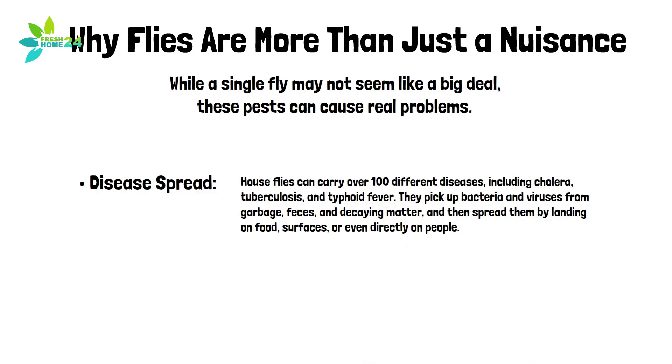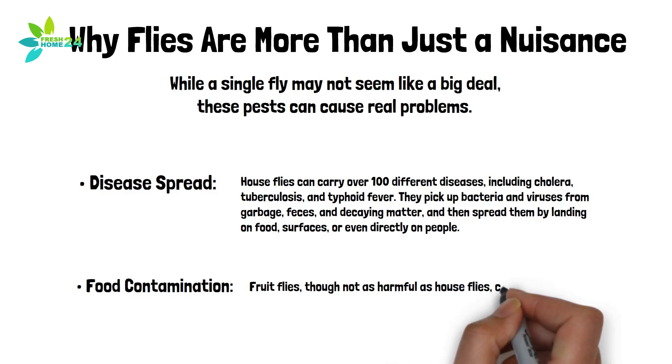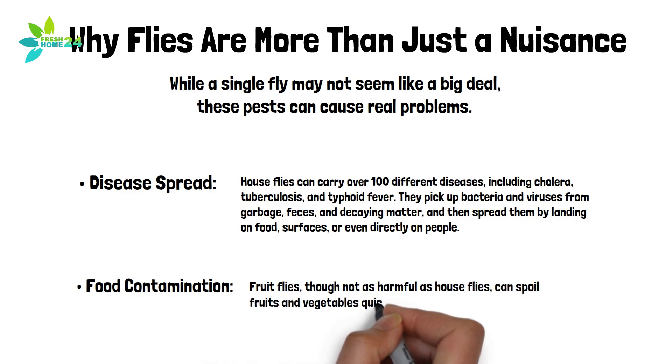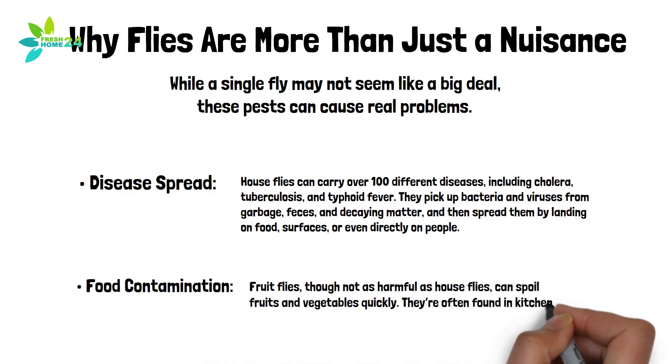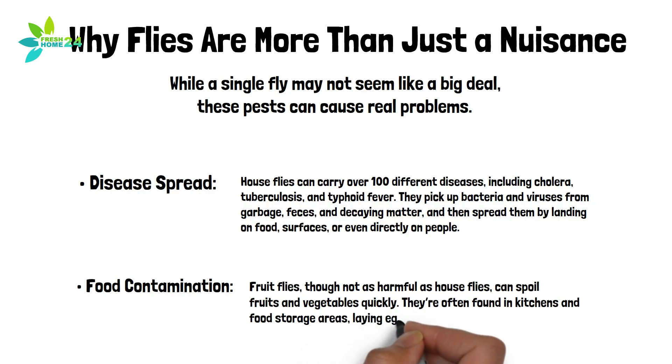Food contamination. Fruit flies, though not as harmful as house flies, can spoil fruits and vegetables quickly. They're often found in kitchens and food storage areas, laying eggs in overripe or decaying produce.